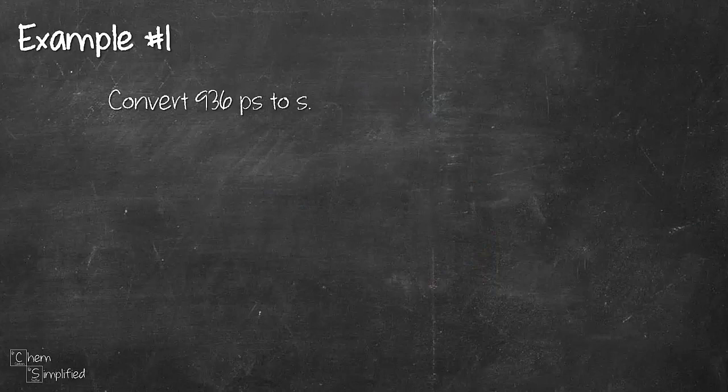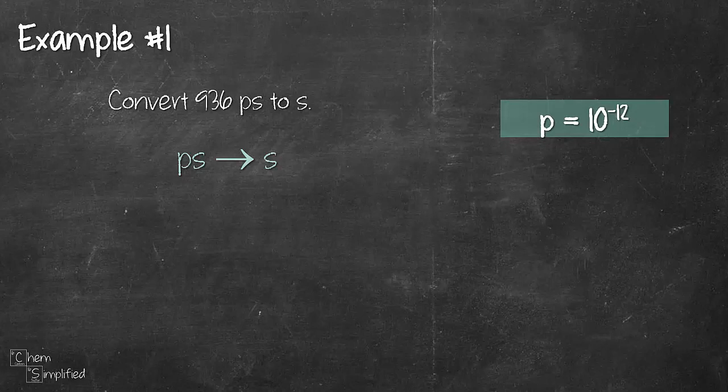The question is asking us to convert 936 picosecond to second. If you recall from our SI prefixes the value for pico which is p, it's 10 to the power of negative 12. So what this means is 1 picosecond is 10 to the negative 12 s. Second is the base unit in this case. Pico is the prefix.